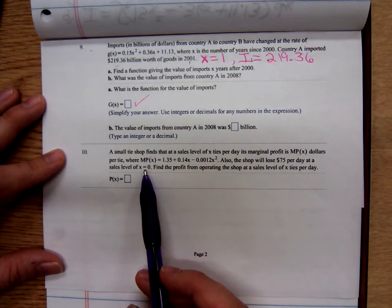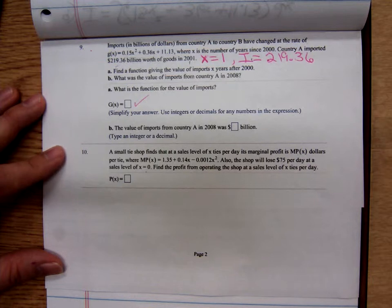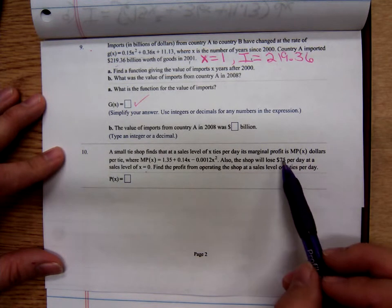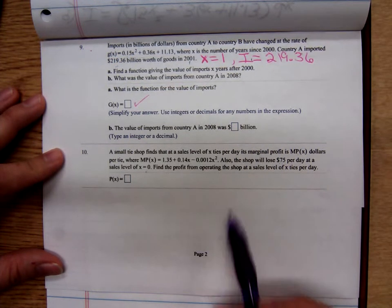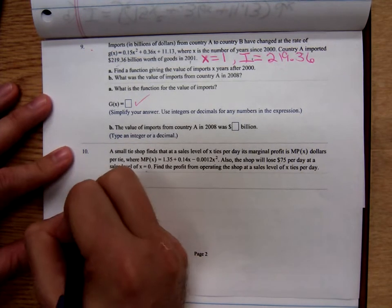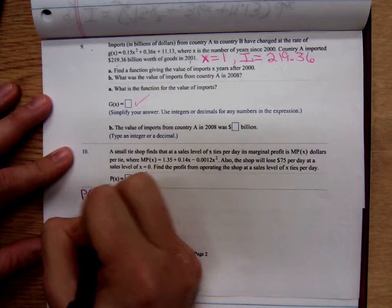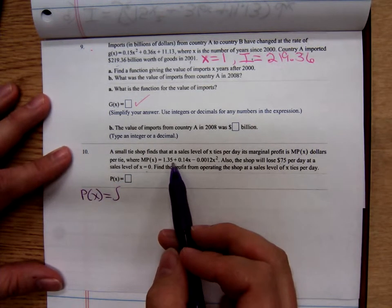Once again, that condition sounds like it's something I'll use to find my constant of integration. Find the profit from operating the shop at a sales level of x ties per day. So we want the profit function. Maybe I have room to do it right here. We're going to have to anti-differentiate the marginal profit function.